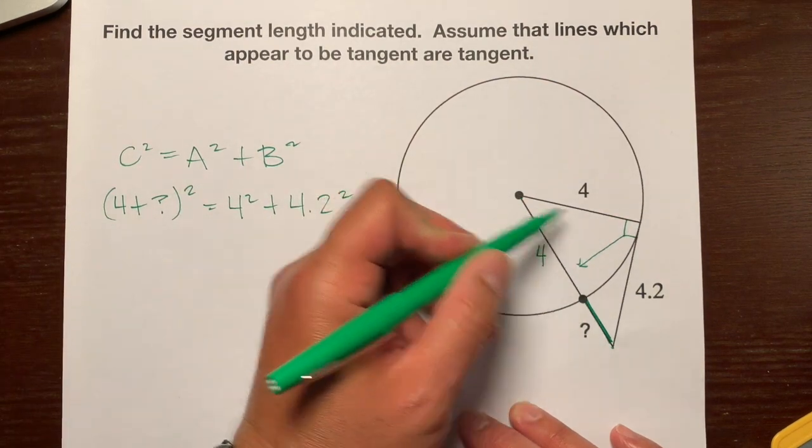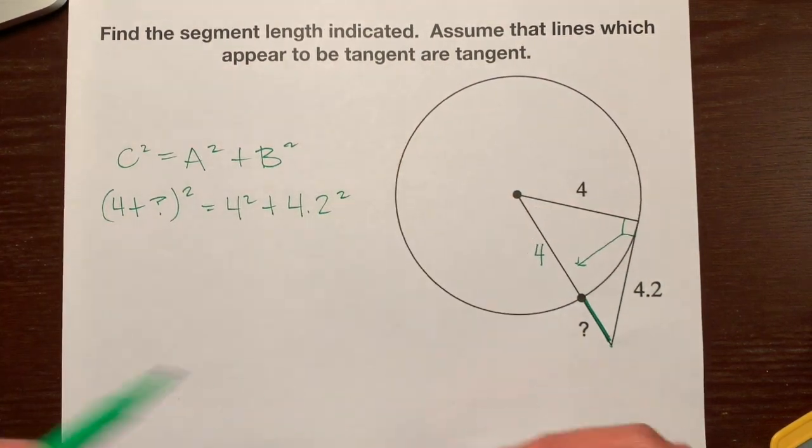And we'll set it equal to a squared, which is 4 squared plus 4.2 squared. So here's our a, here's our b, or this could have been your a, this could have been your b, it doesn't matter.